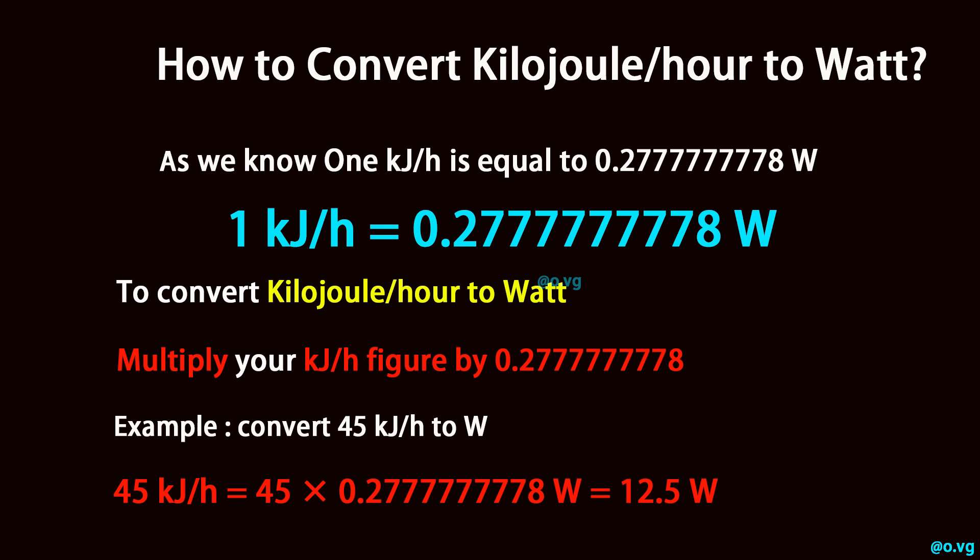To convert kilojoule per hour to watt, multiply your kilojoule per hour figure by 0.2777777778. Example: convert 45 kilojoule per hour to watt.